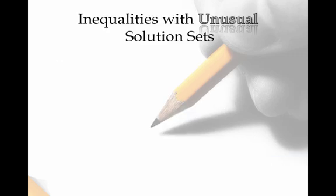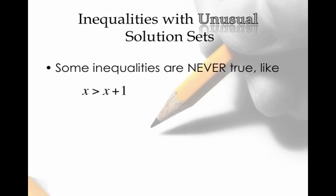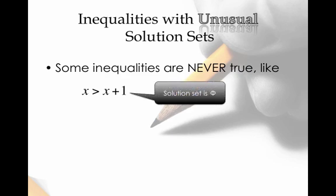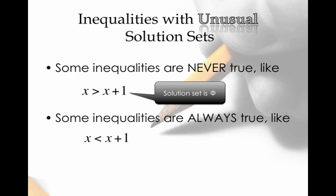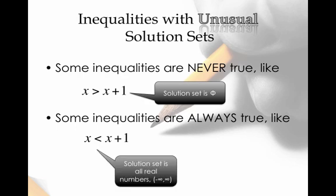Alright, what about inequalities with unusual solution sets? What the heck do I mean by unusual solution sets? Well, some inequalities are never true. For example, x greater than x plus 1. Alright, how could a number ever be greater than itself plus 1? That doesn't even make sense. Okay, and so in a situation like this, the solution set is the null set or the empty set. Alright, and then on the flip side, some inequalities are always true. Like, a number is always going to be less than itself plus 1. Alright, and so for an example like this, the solution set is all real numbers. So sometimes we'll see the capital R, or we can think of it as negative infinity to infinity.